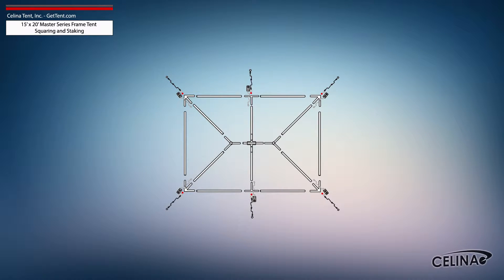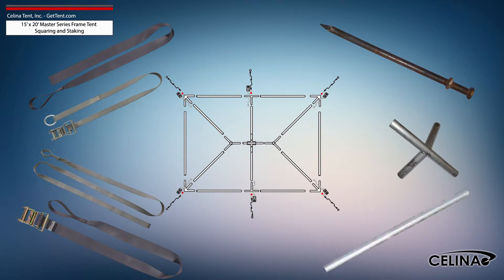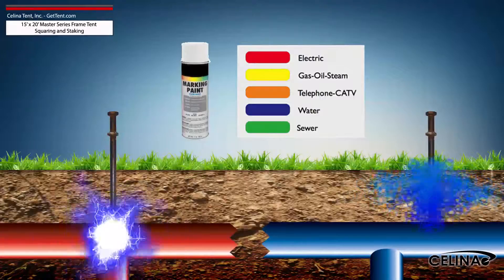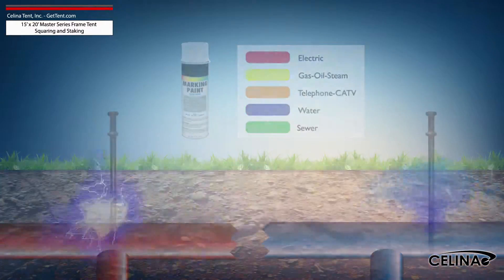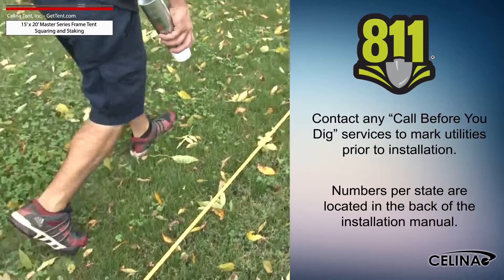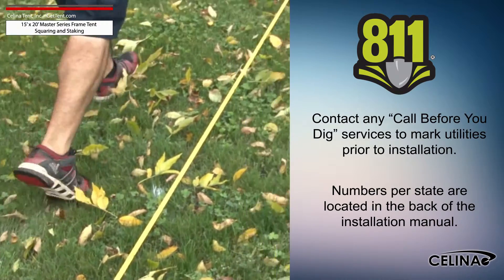Tent squaring allows the installer to accurately place all tent hardware and install tent stakes prior to beginning setup and helps them avoid any marked underground utilities. Utilities must be marked by your state's local utility services prior to any tent installation.